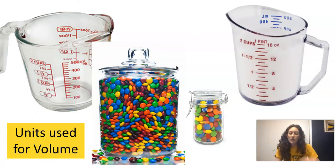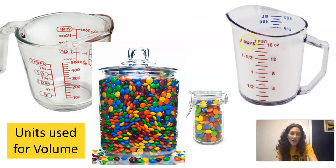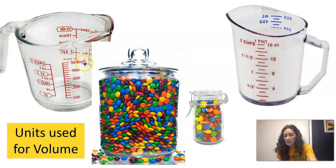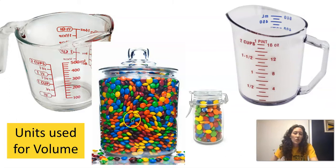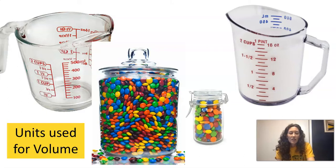We measure volume with different types of units. We were measuring in cups; you could measure in ounces — OZ is for ounces; you can measure in pints; over here I have milliliters. You could also do a comparison with M&Ms — you could see how many M&Ms fill this jar versus this jar, and then make a comparison and say this jar has a larger volume because it can hold more M&Ms, and this jar is smaller because it can hold fewer M&Ms. But when we're actually working in math, we don't usually use these measurements.